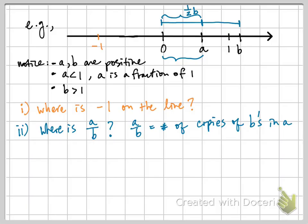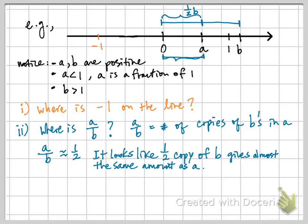And it seems like half a copy of b fits exactly the same amount of a. So the answer to this question, a divided by b, is about half. So to find half on the number line, you first measure out the distance from 0 to 1 and just take roughly half of that. So that gives us a point right about there. So that's where a divided by b lives.